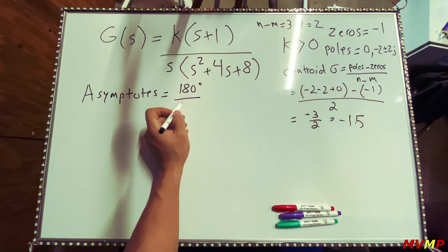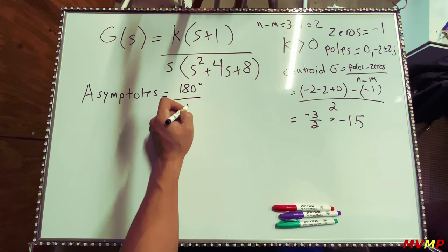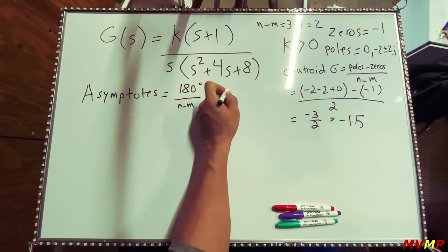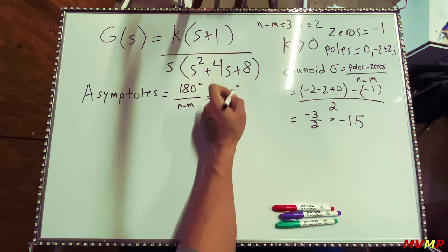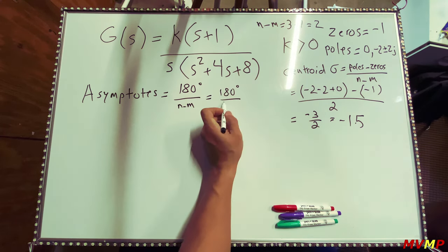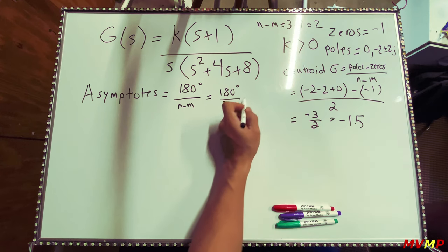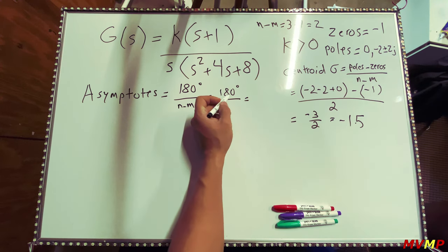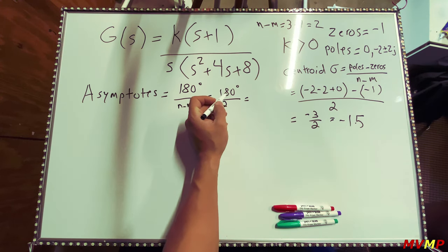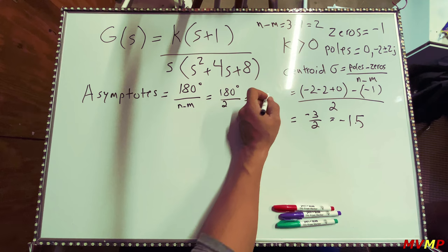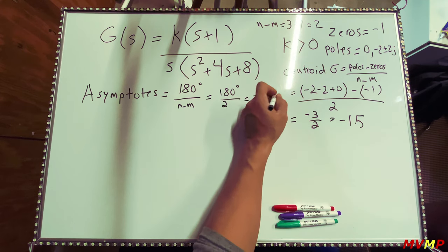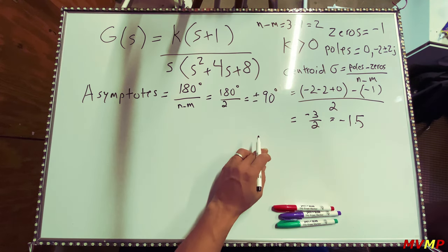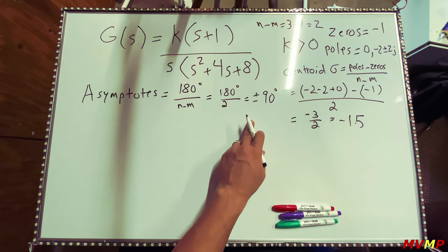For the asymptotes, the formula is 180 degrees divided by n minus m. Since our n minus m is two, we get odd multiples, so we have plus and minus 90 degrees as our asymptotes.